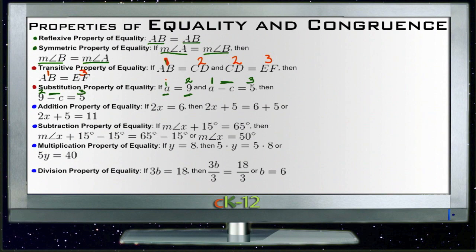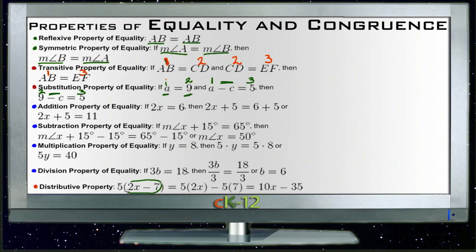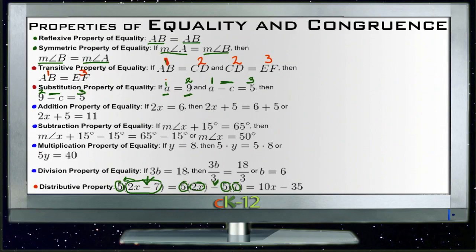Finally, the distributive property sits on its own. It says that if you're taking a group of things — in this case 2x minus 7 — and multiplying by something else, like 5, that is the same as multiplying each thing in the group by 5. So 5 times (2x minus 7) is the same as 5 times 2x minus 5 times 7.